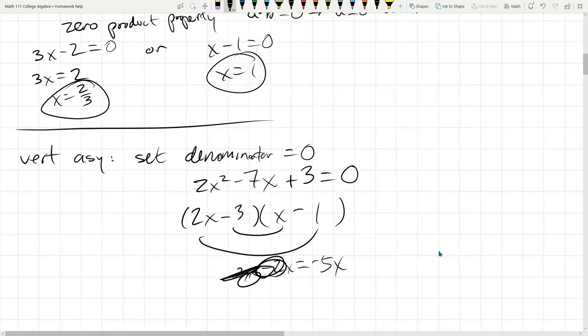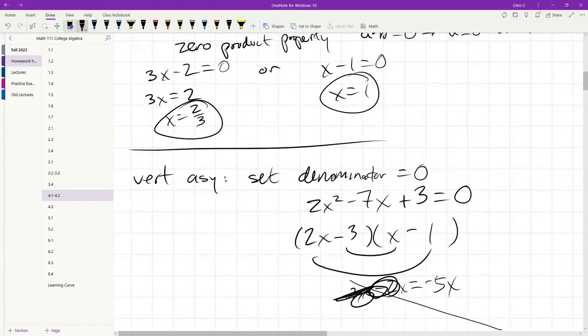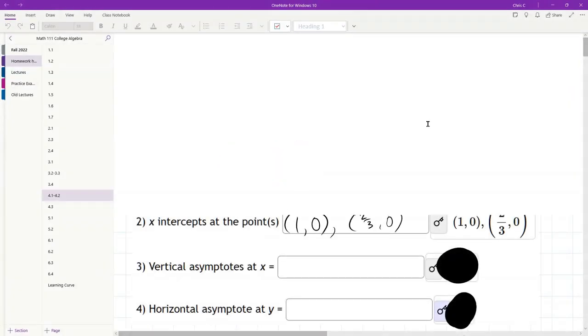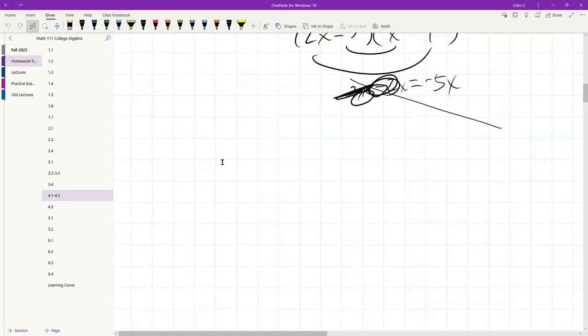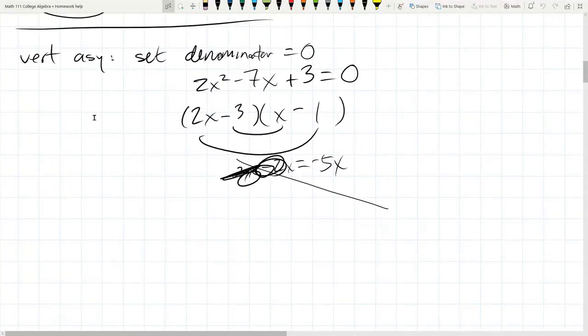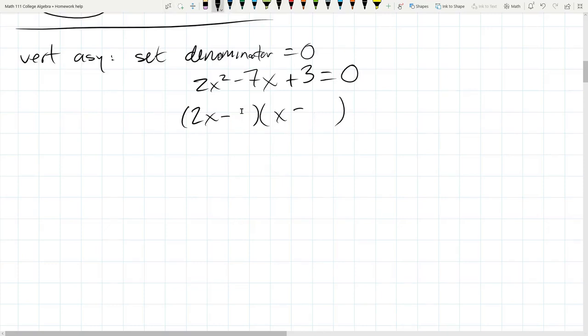So we're going to swap. Pardon the interruption. So we're going to swap those two numbers. So we have negative 6x. The outside is negative 6x. The inside is negative 1x, which is negative 7x. And that is what we're looking for. So we have a winner.